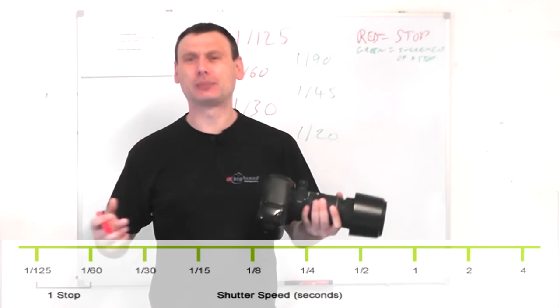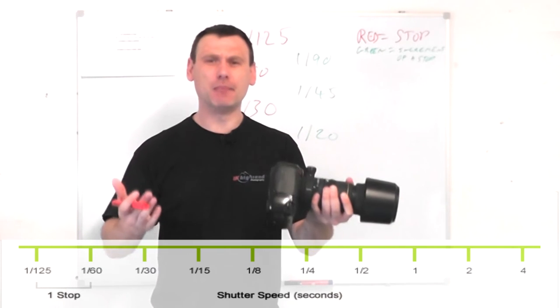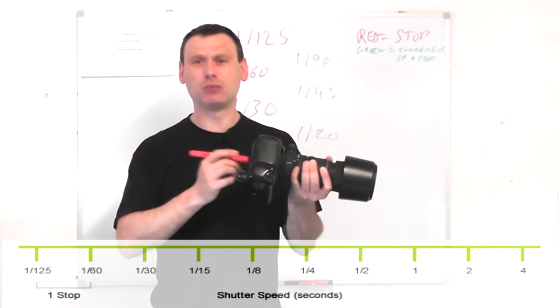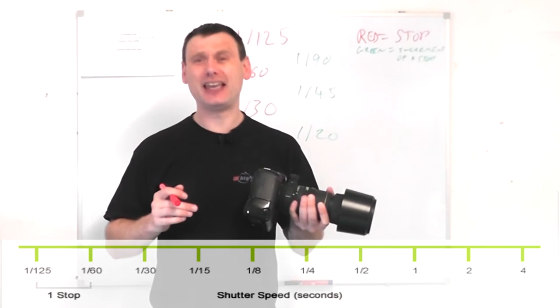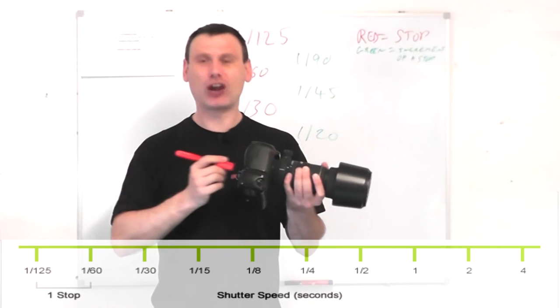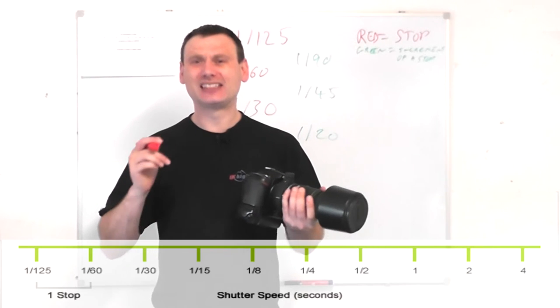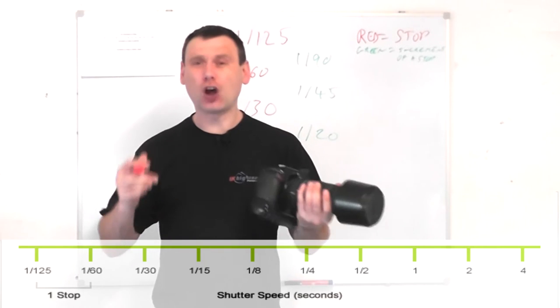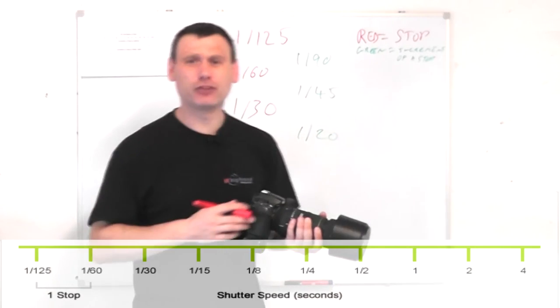Now we all know how shutter speed works. If you use a slow shutter speed you're allowing more light to hit your camera's sensor, and if you use a fast shutter speed then you allow less light in to strike your camera's sensor. But did you know that there's a thing called increments of stops within shutter speed in photography? Let's have a look.